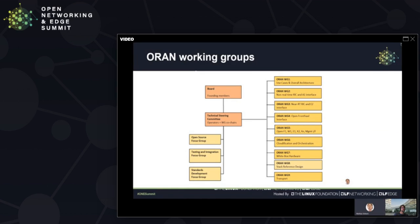Looking at the structure of ORAN, there are nine different working groups defined, reflecting the objectives. Working groups 4 and 5 relate to objective 1 — further disaggregation — where working group 4 works on the lower layer split or open fronthaul interface, and working group 5 refines standardization around 3GPP-defined interfaces such as F1 and X2. For objective 2, automation and optimization, ORAN has two working groups working on the new control loops and associated controllers and interfaces.